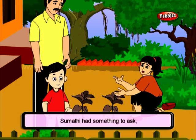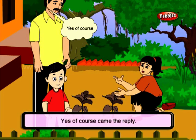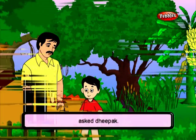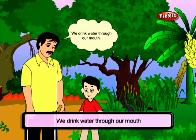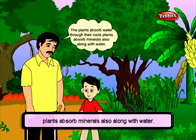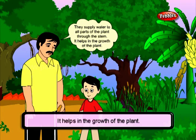Sumati had something to ask: 'Will plants die if we don't pour water?' 'Yes, of course,' came the reply. Deepak asked, 'Father, plants don't have a mouth. How do they drink water?' Father answered with a smile: 'We drink water through our mouth. The plants absorb water through their roots. Plants absorb minerals also along with water. They supply water to all parts of the plant through the stem. It helps in the growth of the plant.'